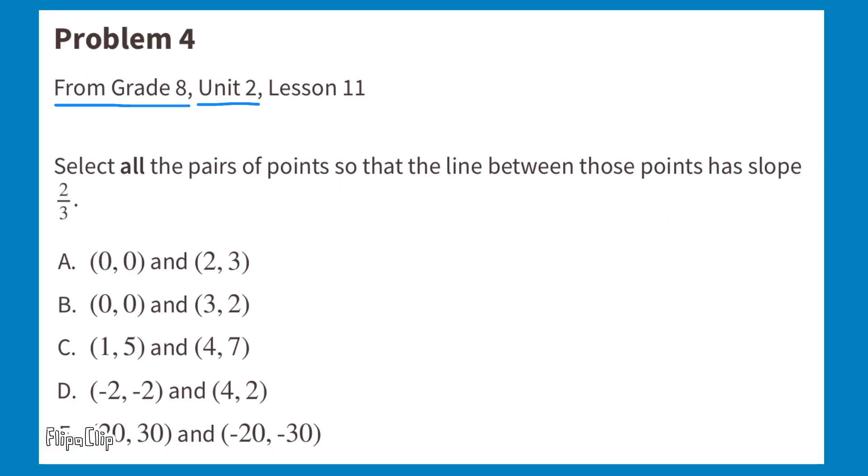Problem number 4. From 8th grade, unit 2, lesson 11. Select all the pairs of points so that the line between those pairs has slope 2 thirds. Coordinate Y2 minus coordinate Y1 over coordinate X2 minus X1. That would be 3 minus 0 over 2 minus 0. So we have 3 halves. 3 over 2. It's supposed to be 2 over 3, so that doesn't work.